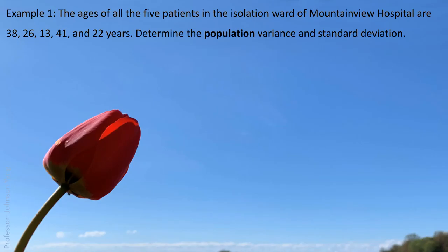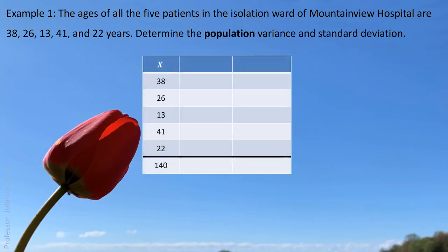Here's an example. The ages of all five patients in the isolation ward of Mountain View Hospital are 38, 26, 13, 41, and 22. So we have a small population here. The population size is five — we have only five data points in this collection. We will calculate the variance and the standard deviation. We can conveniently use a table to show our process.